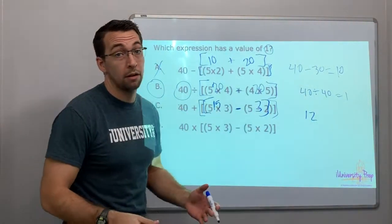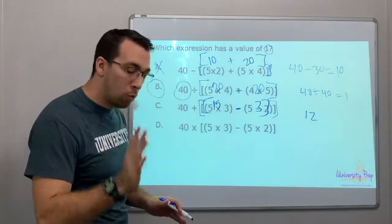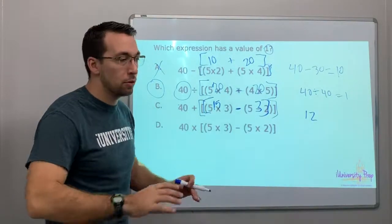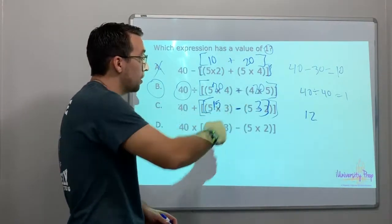Parentheses, now you do the bracket. And that's when you have a double - that's called a double grouping. You have a grouping within a grouping. One step at a time. Parentheses first, and parentheses and parentheses. Once you get all your parentheses done, then you move on. 40 plus 12.